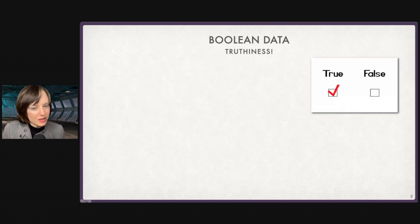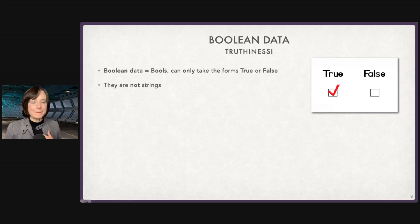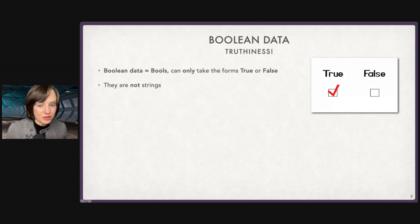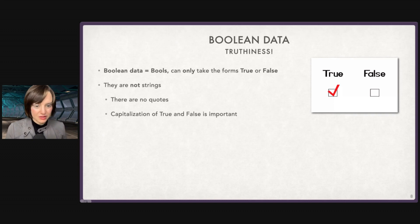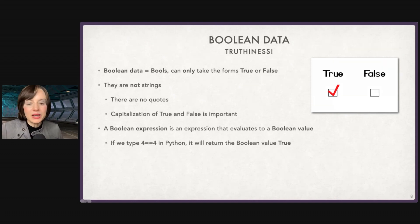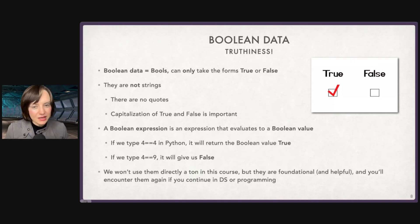Boolean data is truthiness. We're not going to use this a ton, but it'll come up and it feels wrong to leave it out. Bools can only take the form of True or False — those capital letters matter. They are not strings. If I put the word true in quotation marks, it will be stored as a string and I won't be able to use it as a bool. No quotation marks; capitalization matters. A Boolean expression evaluates to a Boolean value — if I write four == four, it will return True; if I type four == nine, I will get False.